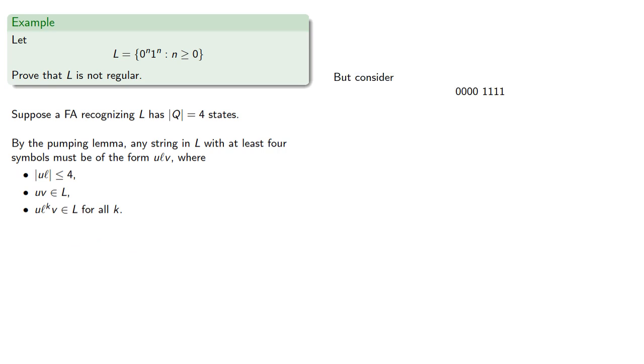But consider something like, if the first part of the string has length less than or equal to 4, then it must be one of, now we don't know which one it is, but suppose it's the first one, then l itself has to be some string of zeros.